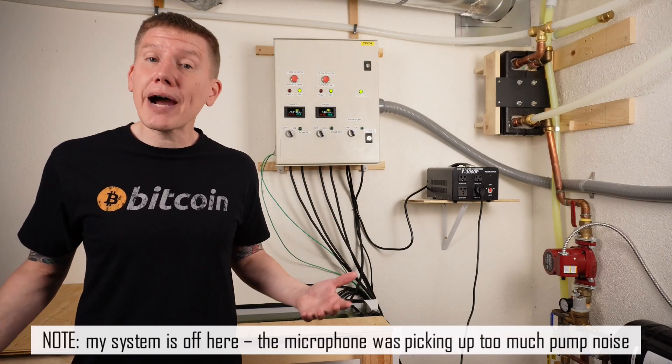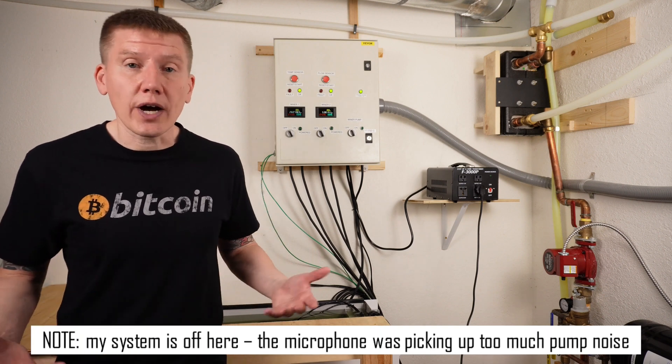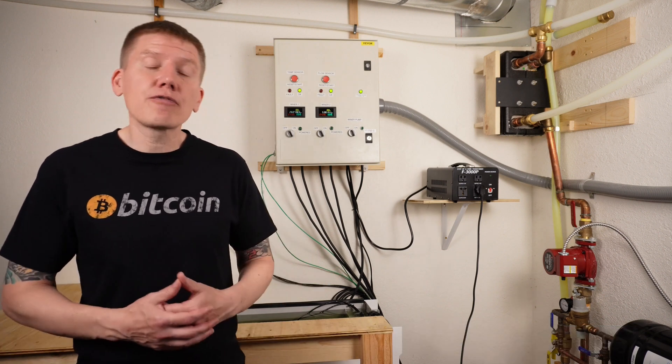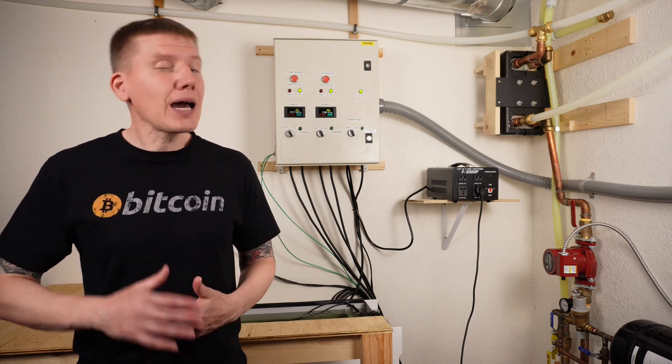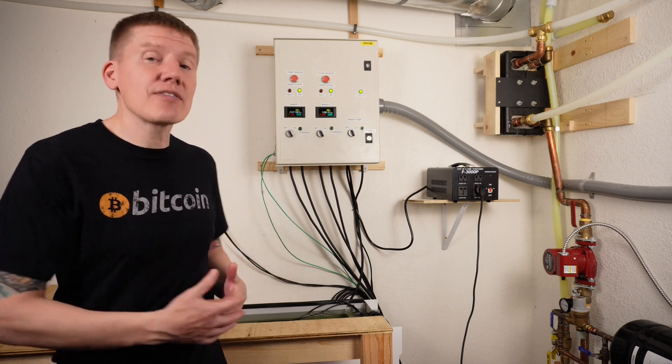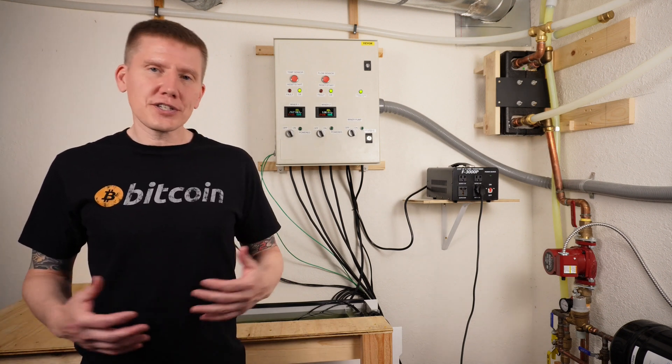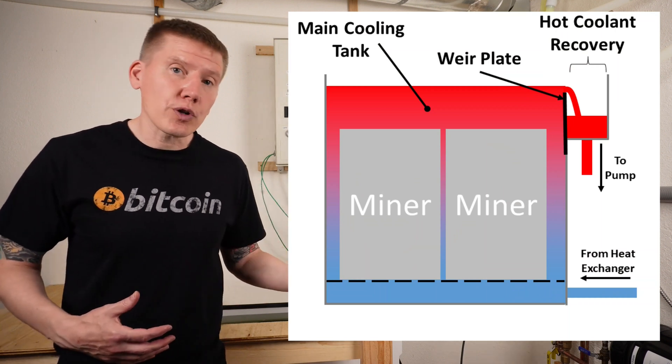So here in my mining room, I have the BitPod tank right side up, full of fluid, and ready to run. I've been running the system now for several weeks, but I've only been able to run one miner, and I'm going to get into that a little bit. For right now, I'm going to cover what it took to get everything up and running. And the first thing to talk about is the weir plate between the main tank and the hot coolant recovery.